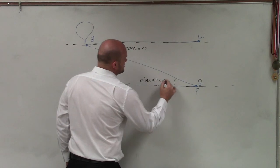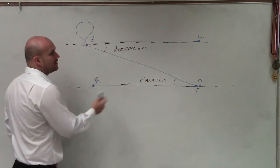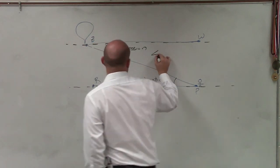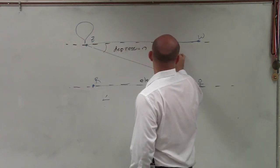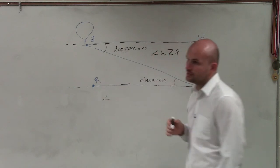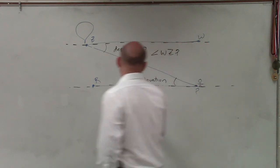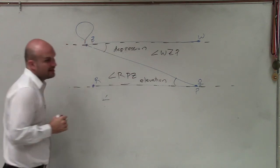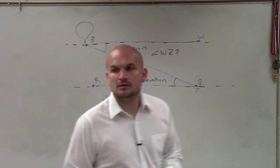Now, if they wanted us to name them, remember, an angle, we can say them as three different points. So I can say angle, I'll just lay it right here. Angle WZP is your angle of depression. And for your angle of elevation, I'll say angle RPZ is my angle of elevation. All right.